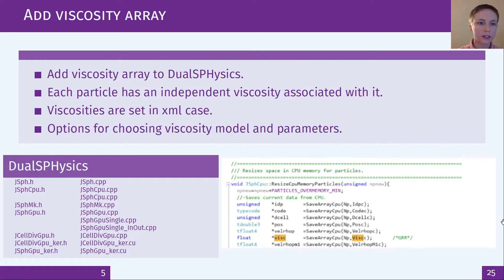So firstly I added a viscosity array to DualSPHysics so that each SPH particle can have its own viscosity rather than there being a single viscosity for the flow. These viscosities are set in the xml case along with options for viscosity model and parameters. Here on the left are the DualSPHysics files which I've modified to do this and on the right some example DualSPHysics code where the new array has been added.